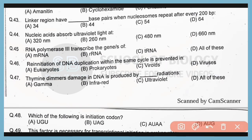Question number 43. Linker region has how many base pairs when nucleosome repeats after every 200 base pairs? So correct answer is option A. Linker region has 34 base pairs when nucleosome is repeated after every 200 base pairs.